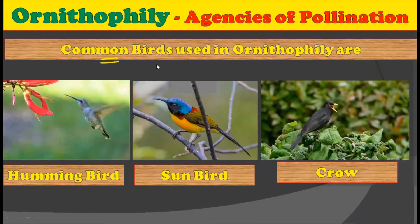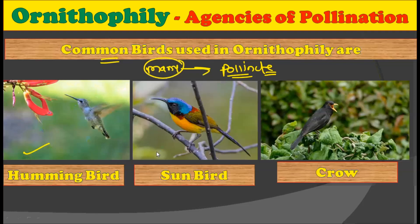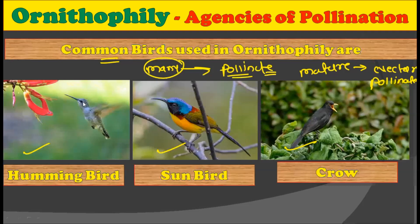Let us consider some common birds used in ornithophily. There are many bird species which rely on plant flowers for their nectar and in this process indirectly pollinate the plant. A few species are very famous for this concept: the hummingbird, sunbird, and crow. These species regularly visit mature flowers where they get nectar and in the process the flower gets pollinated.